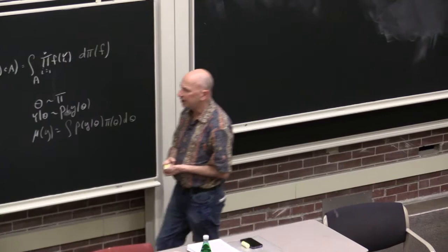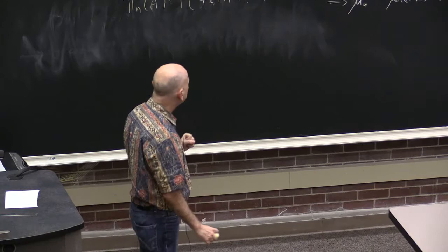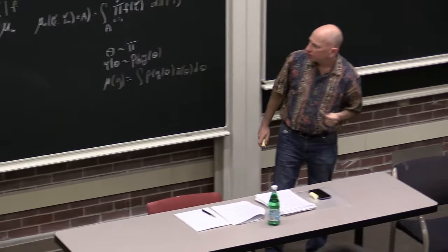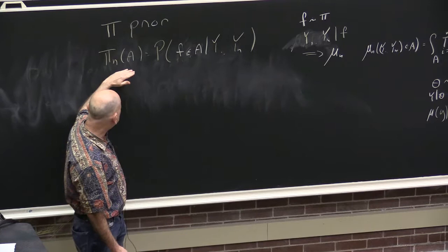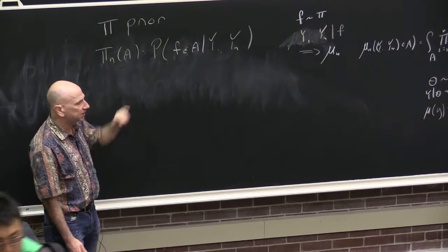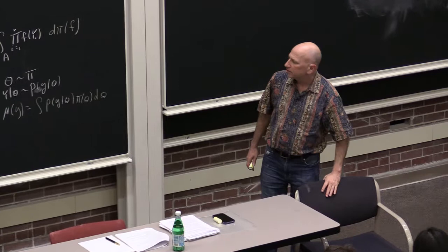Today we want to talk about the theoretical properties of these nonparametric Bayesian things. This is quite interesting because it's an example of where nonparametric inference and parametric inference are really quite distinct. The questions we want to address are: if I do nonparametric Bayesian inference, what does that mean? I'm going to put a prior on a space of functions — it could be density functions, CDFs, or regression functions. Then we get a posterior distribution. So I'm calling that pi sub n of A. We want to talk about consistency, rates of convergence, and confidence levels.